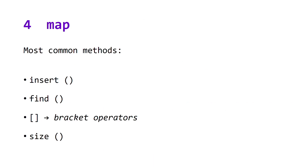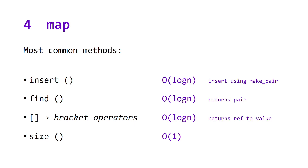Data structure number four: map. Map is very similar to set, but instead of just storing an element or a value, it stores both a key and a value. The four most common methods of map are insert, find, the bracket operators, and size. The runtime of these methods are log n for the first three and constant for size. We use make_pair to insert. Find will return us the whole pair. And the bracket operators — if the key does not exist, will do an insertion, and if the key does exist, it will return us a reference to the value.